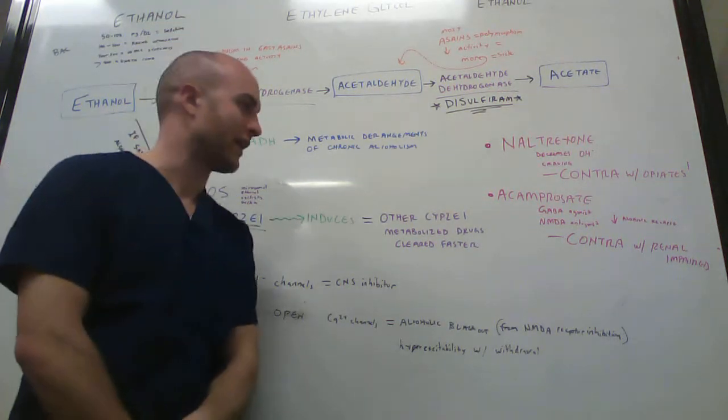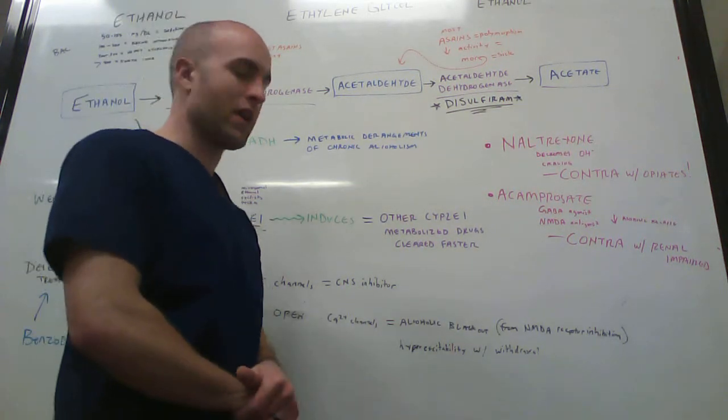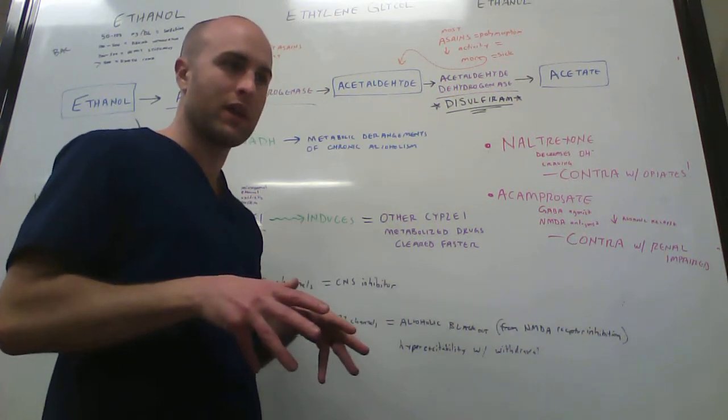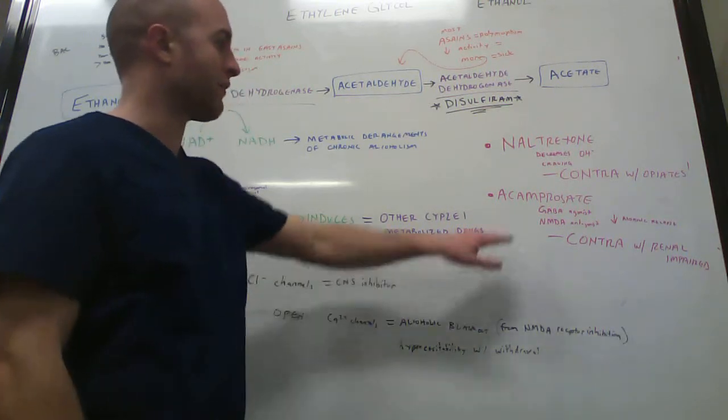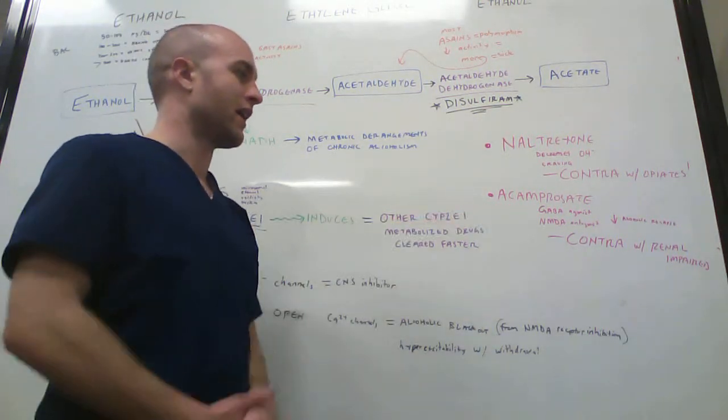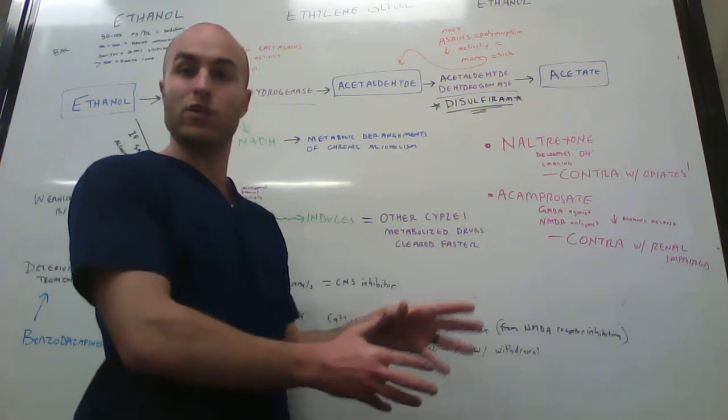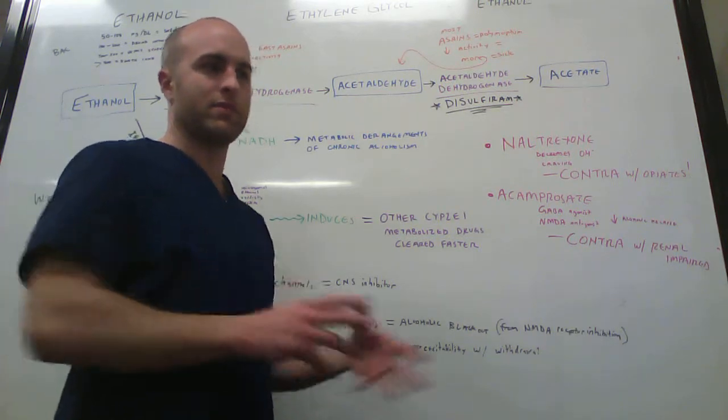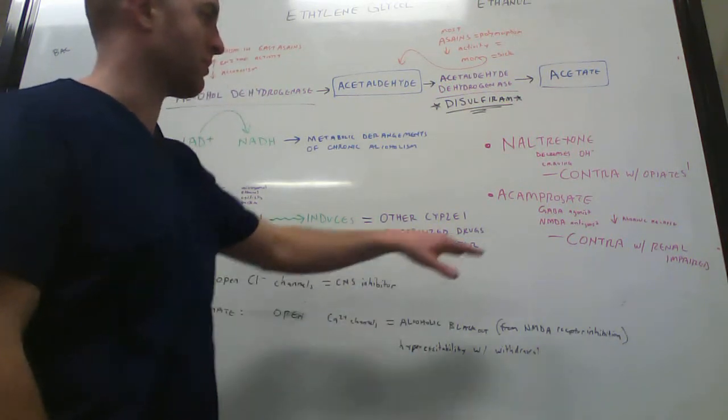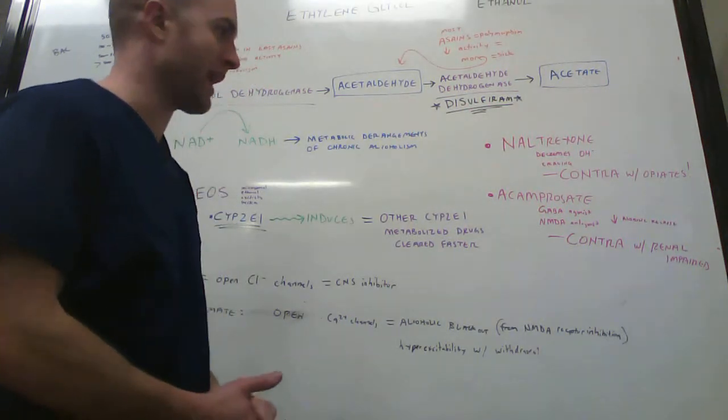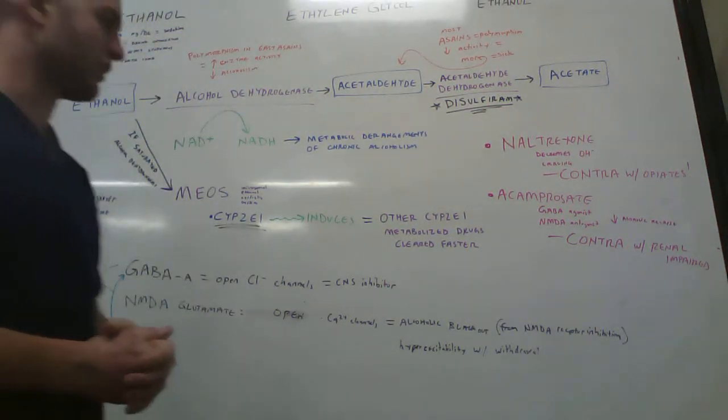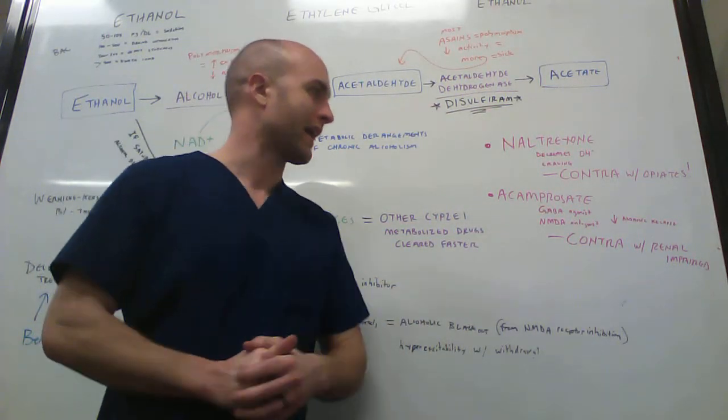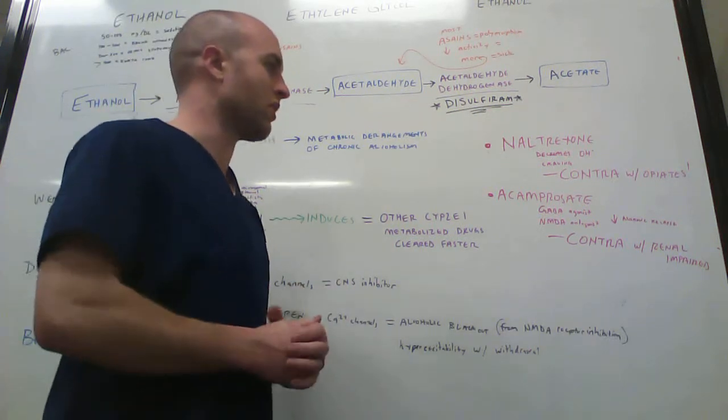Then you also have acamprosate. And acamprosate, typically what will happen with alcoholics is they'll drink, then they'll quit, but then they'll go back to drinking again. And apparently, if they take this acamprosate, it'll help them not to go back to drinking again. It'll decrease that falling back into alcoholism. And it does this because it's a GABA agonist, the GABA-A agonist, if you remember, had to do with the chlorine channels, CNS inhibitor. And it's also a NMDA antagonist. So those two things decrease alcoholic relapse.